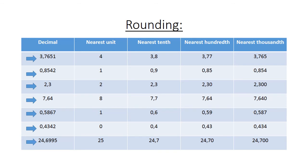For 24,6995: rounded to the nearest unit is 25. The nearest 10 is 24,7. The nearest 100 is 24,70 and the nearest 1000 is 24,700.